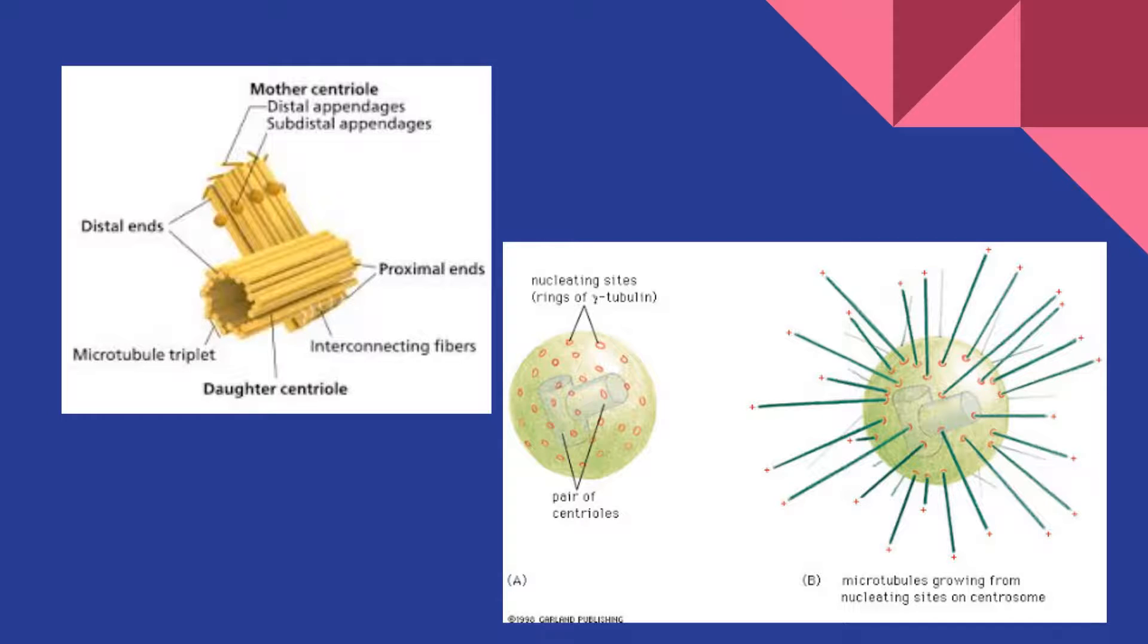The reason for this is that forming the initial tubulin ring requires a high concentration of free tubulin dimers in the cytoplasm. Typically, these dimers are not found in high enough concentration to form a full ring, only enough to build off the ring structure.